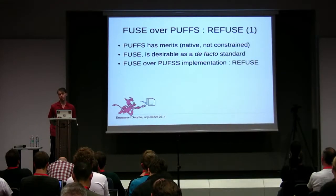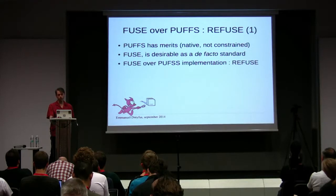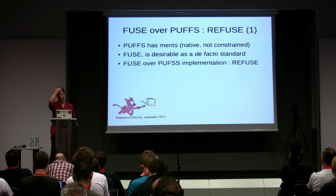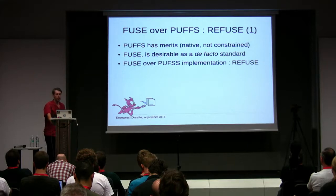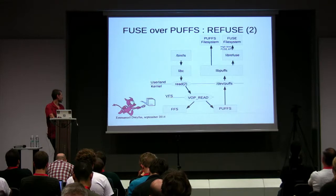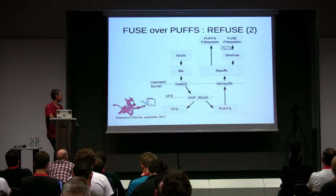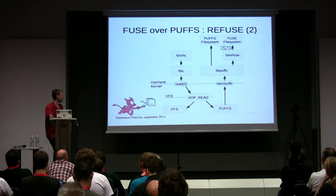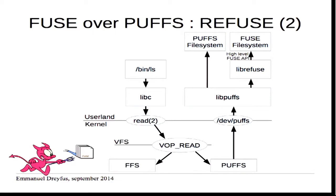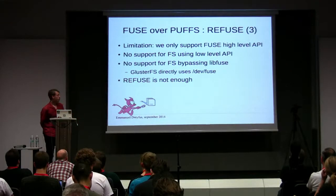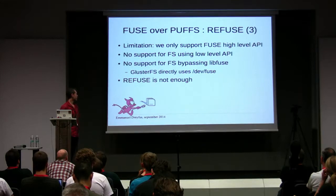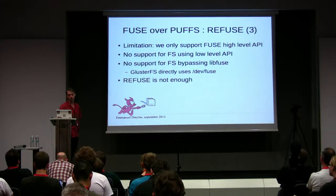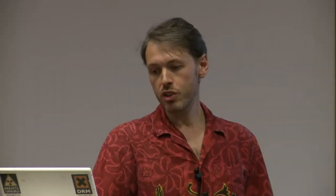PUFFS is there to stay because it has merit, but FUSE is highly desirable because today people write file systems using FUSE. So we need FUSE on NetBSD. A first attempt was made called Refuse — a nice pun — which is an implementation of FUSE over PUFFS. On top of libpuffs you can have libfuse and librefuse, and on top of librefuse a FUSE file system using the high-level FUSE API. But it only supports the high-level API, missing two APIs. GlusterFS, my target, opens /dev/fuse and talks to the kernel directly without librefuse, so Refuse is not enough.